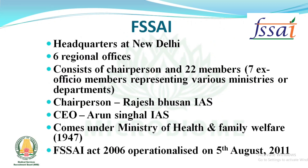About Food Safety and Standards Authority of India: its headquarters is at New Delhi. It has 6 regional officers and consists of a chairperson and 22 members, with 7 ex-officio members representing various ministries or departments. The present chairperson is Rajesh Bhushan. The present CEO, Chief Executive Officer, is Arun Singhal. It comes under the Ministry of Health and Family Welfare.